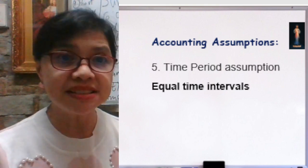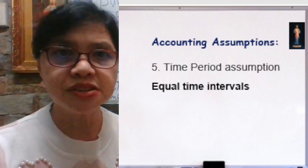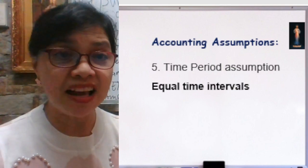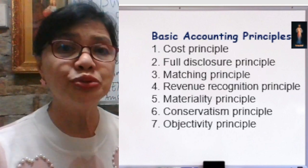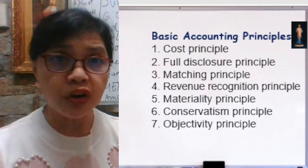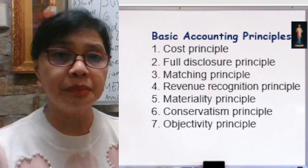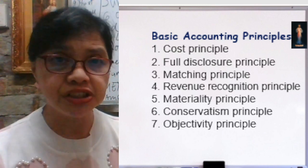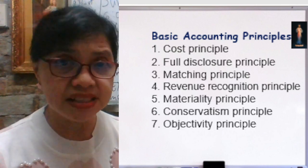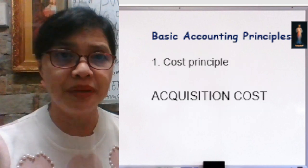We have already discussed the accounting assumptions. Let us now go to the basic accounting principles. We have seven: the Cost Principle, the Full Disclosure Principle, the Matching Principle, the Revenue Recognition Principle, the Materiality Principle, the Conservatism Principle, and the Objectivity Principle. Let's discuss them one by one.